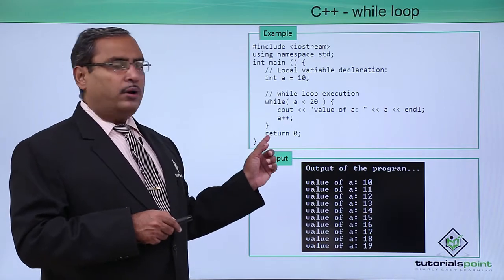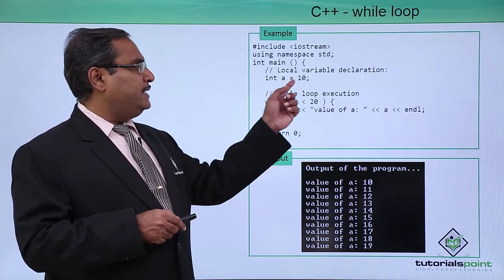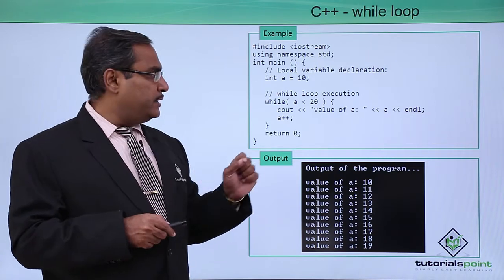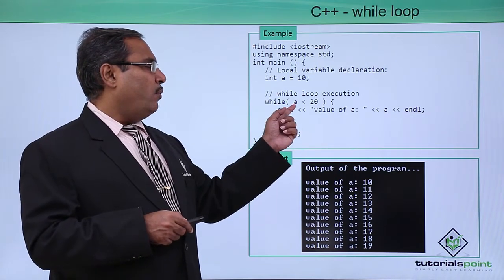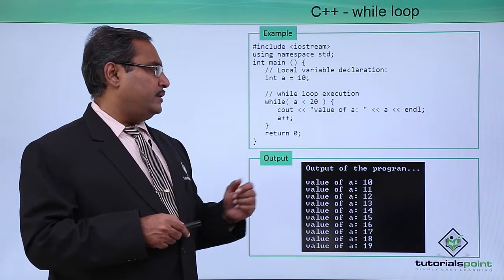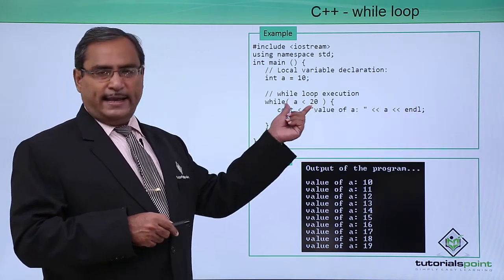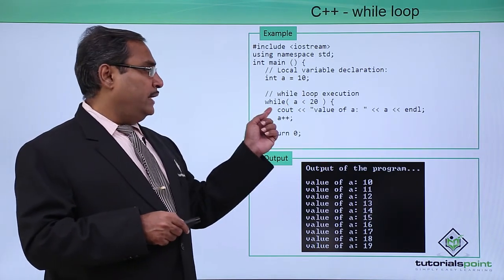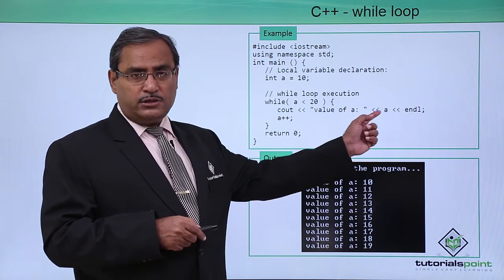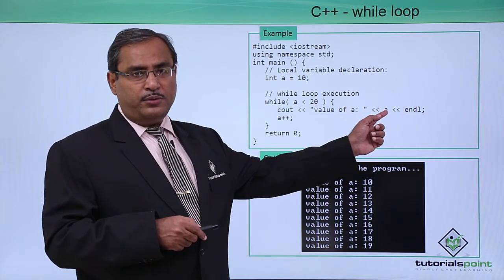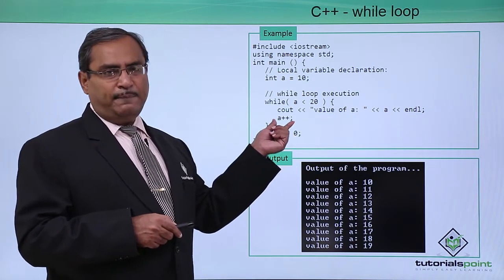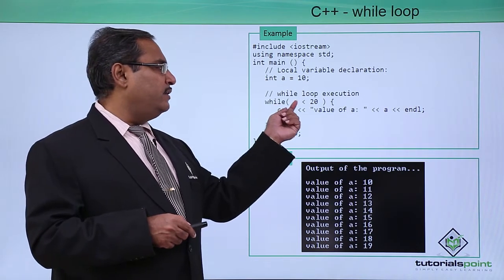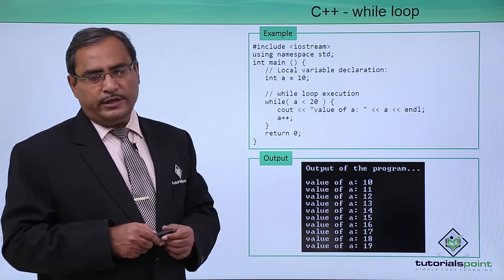Here is the respective program. We initialize int A equal to 10, then while A is less than 20. Since 10 is less than 20, the condition is true, so this line will get executed — the value of A will get printed, then A++, so value of A will become 11. Again, whether 11 is less than 20 will be checked.